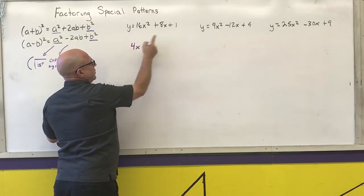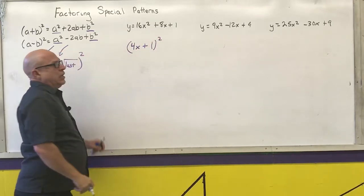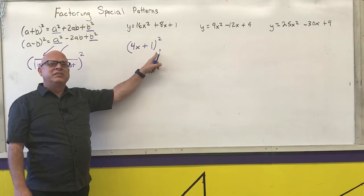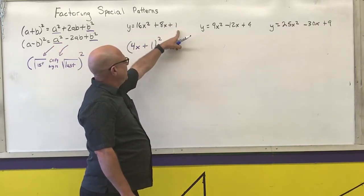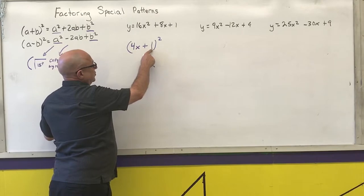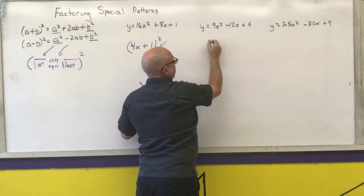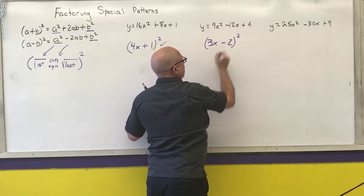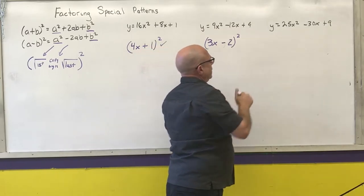For the first: square root of the first is 4x, square root of the last is 1, copy the plus sign, all squared — giving 4x plus 1, quantity squared. Check: 2 times 1 times 4x equals 8x. It checks. For the second: square root of the first is 3x, square root of the last is 2, copy the minus sign — giving 3x minus 2, quantity squared. Check: 2 times negative 2 times 3x equals negative 12x. That one checks.